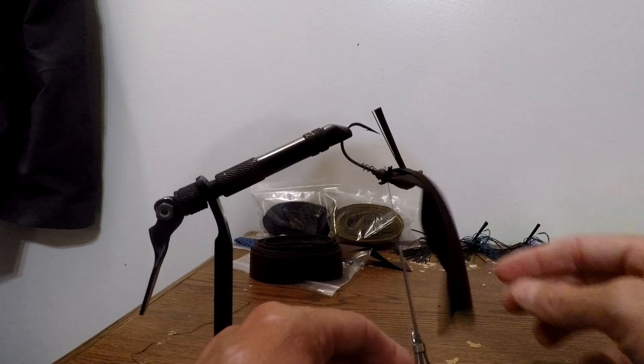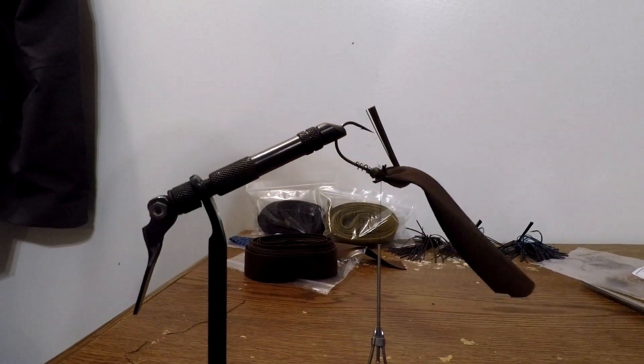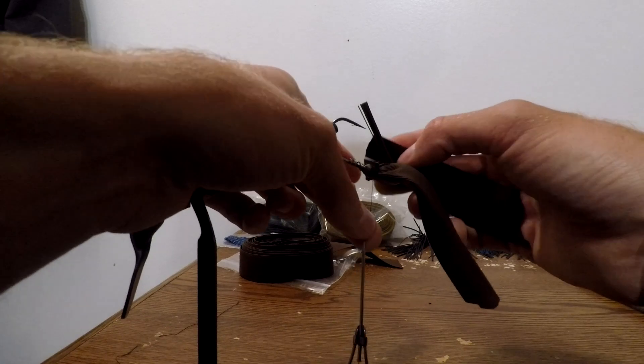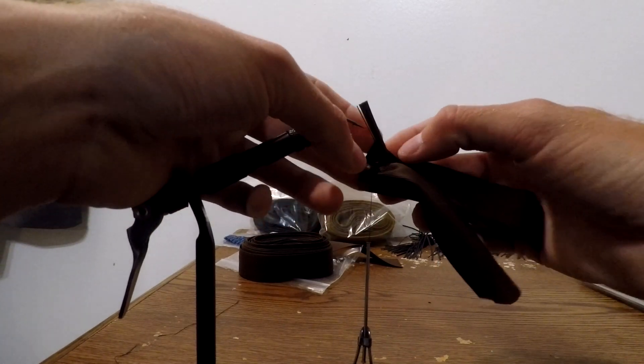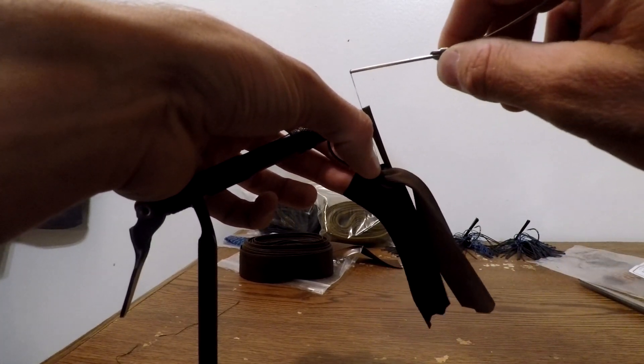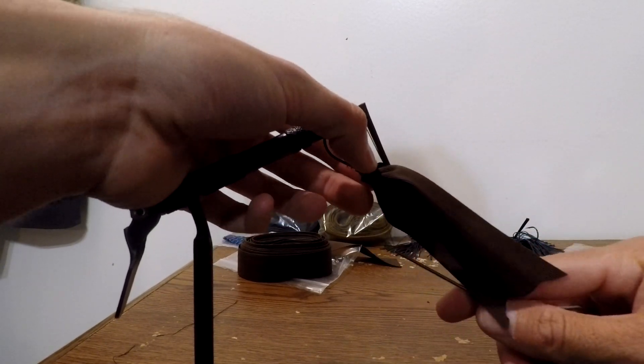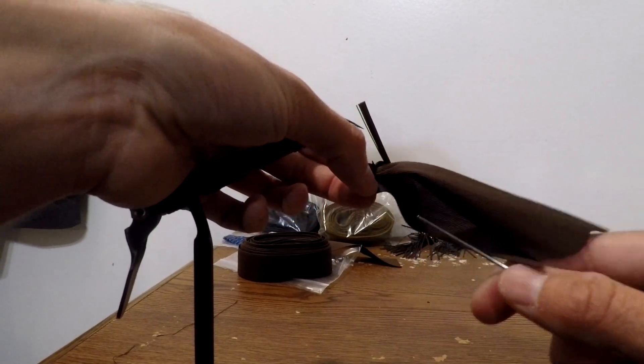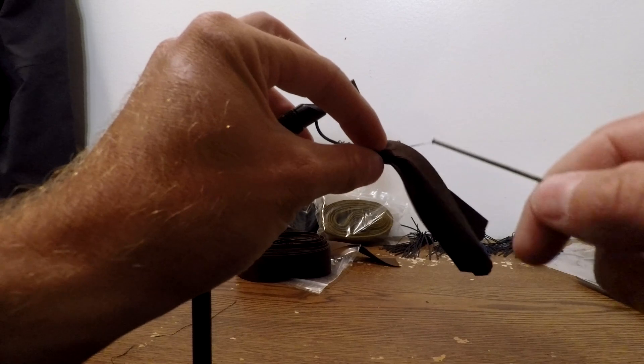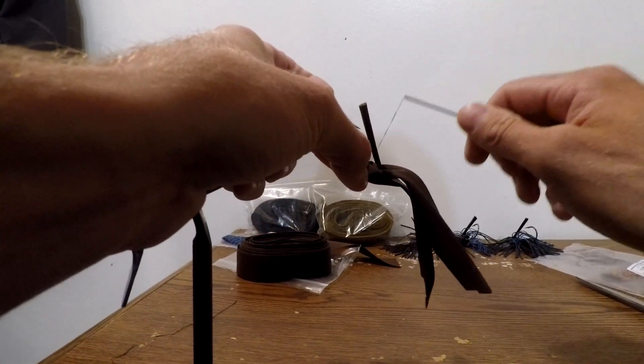I usually like to run two skirt tabs just because that gives it a nice bulk, and it's pretty much the right profile you need. So let's start a second tab here. Get that lined up right. Make sure you get the bottom of it with the thread. Once you get a nice wrap on there, it's pretty simple. Alright, there we go, we got that one started.